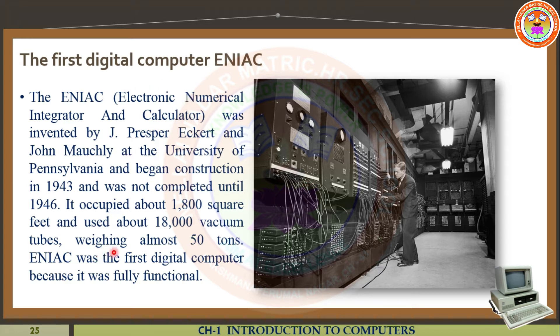ENIAC was the first digital computer because it was fully functional — this is the successive version of the digital computer in the period of 1943 to 1946. This is the information regarding the first digital computer. The name is ENIAC — Electronic Numerical Integrator and Calculator. Don't forget, my dear students.